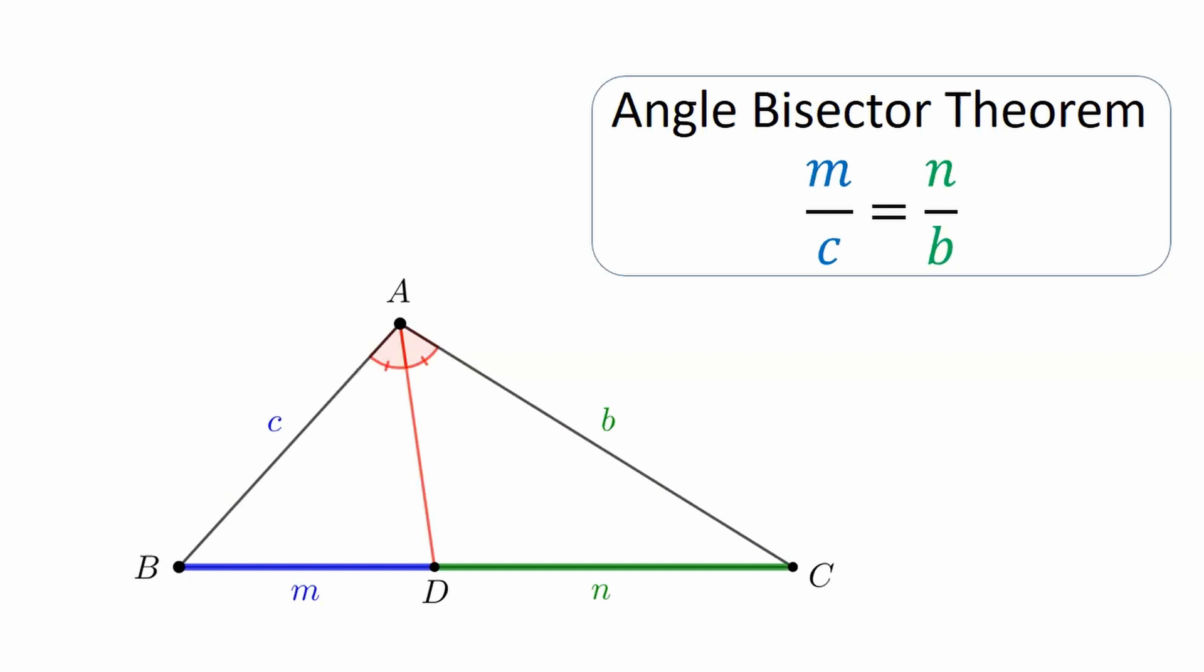Now, it turns out that the labels shown here, it turns out that the two parts of BC are proportional to the adjacent sides. M over C equals N over B. This is the angle bisector theorem.